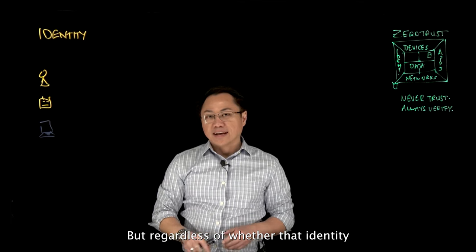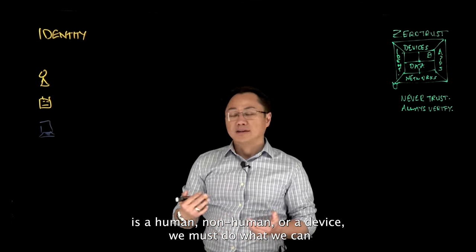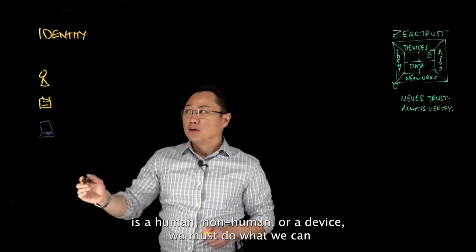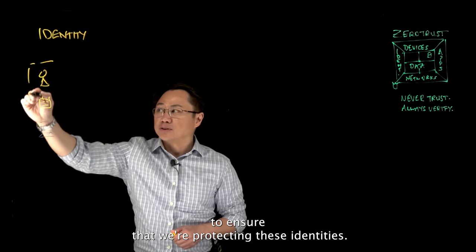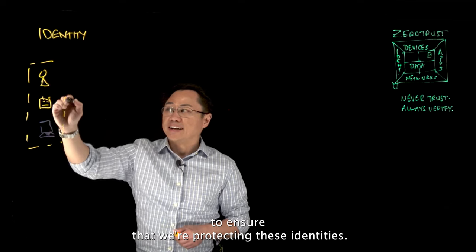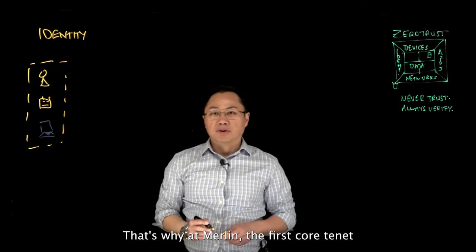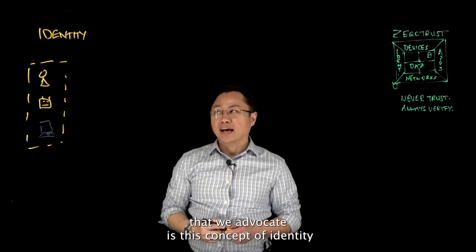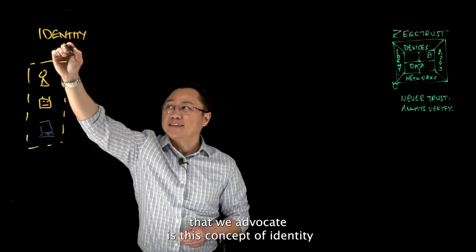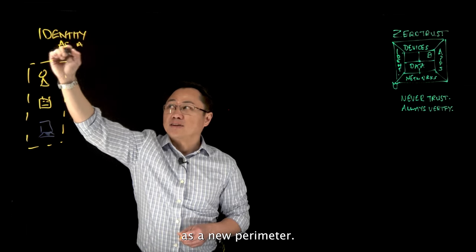But regardless of whether that identity is human, non-human, or a device, we must do what we can to ensure that we're protecting these identities. That's why at Merlin, the first core tenant that we advocate is this concept of identity as a new perimeter.